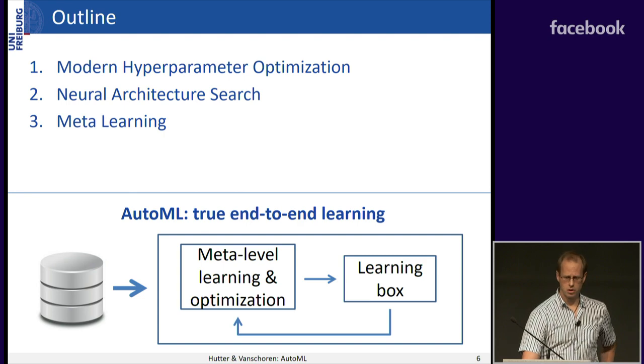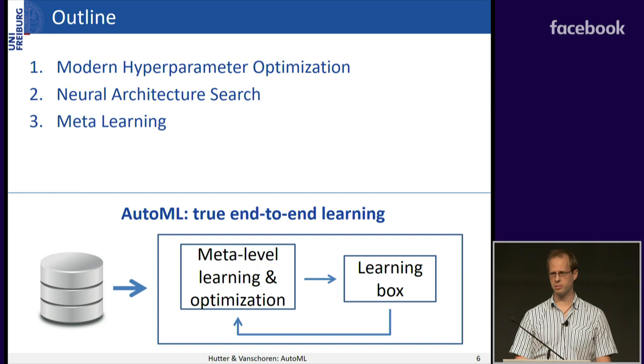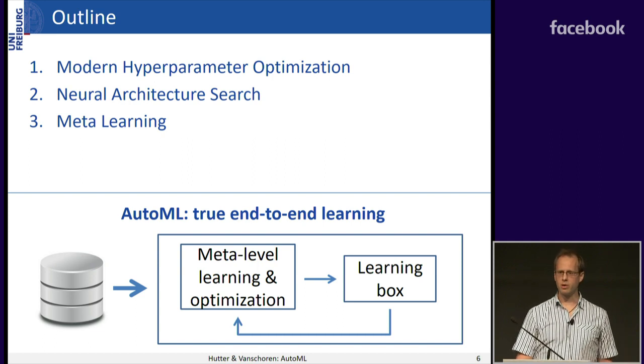The outline of the tutorial is as follows. We'll first talk about modern approaches to hyperparameter optimization — which might sound boring, but you can't really do AutoML without a robust and efficient core. Then we'll talk about neural architecture search, and then about meta-learning. I'll cover the first two, and Joaquin is going to talk about meta-learning.